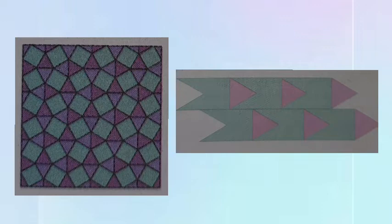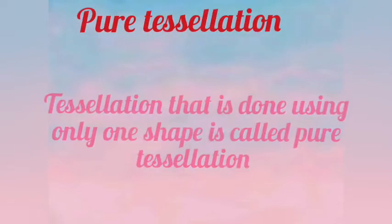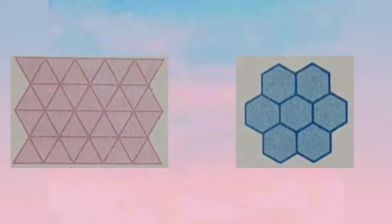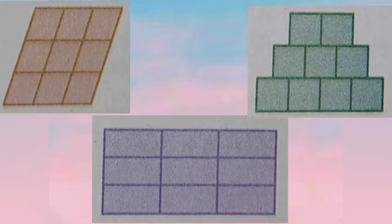Tessellations can be divided into several parts. First, we are learning about pure tessellation. A tessellation that is done using only one shape is called a pure tessellation. These are some examples of pure tessellations. You can observe that in all these figures only one shape is used.